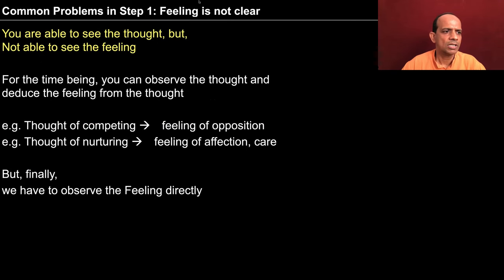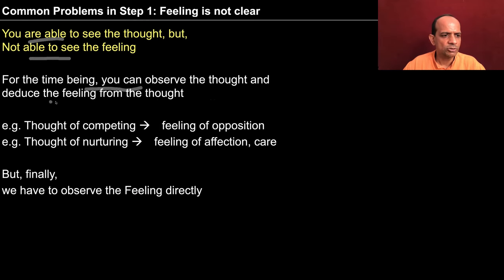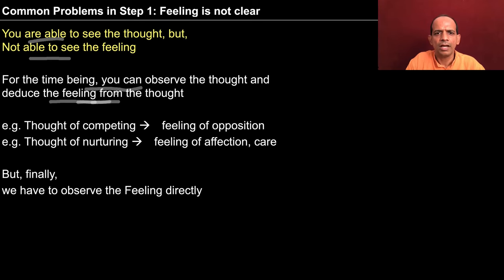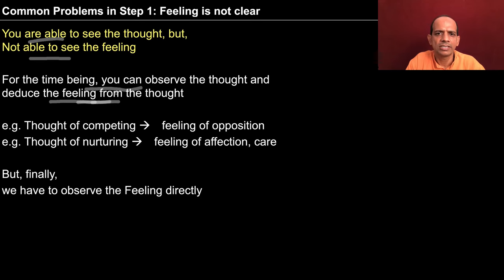The second problem is that you are able to see the thought but not able to see the feeling. For the time being you can observe the thought and then deduce the feeling. For example, in your imagination you might be arguing with somebody for minutes or hours, struggling within yourself, not able to come out of it. If you just pause and ask why you were arguing — whether there is a feeling of opposition or relationship — you can easily see the feeling guiding the argument.